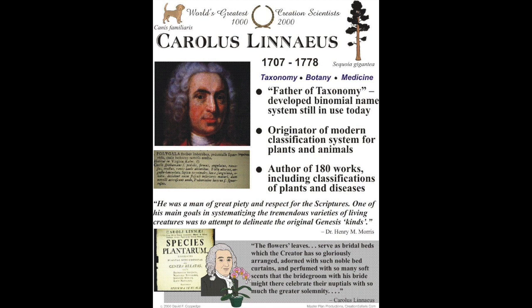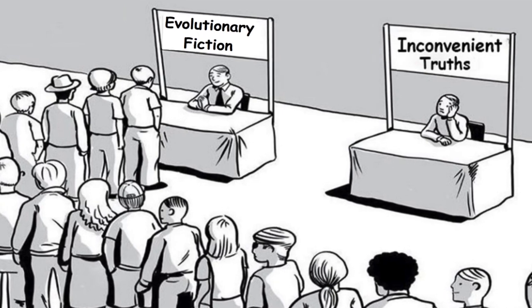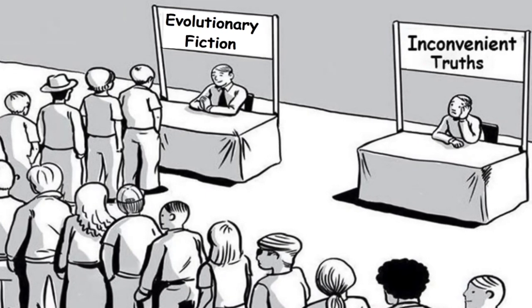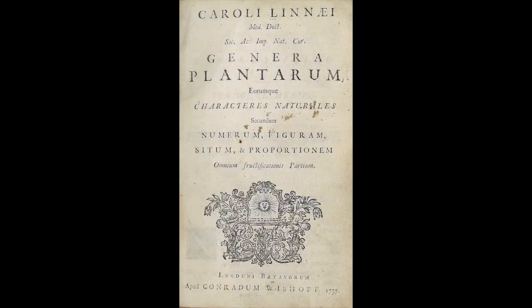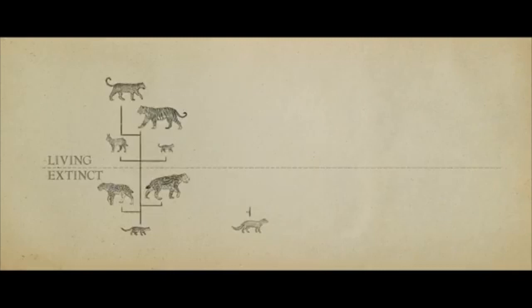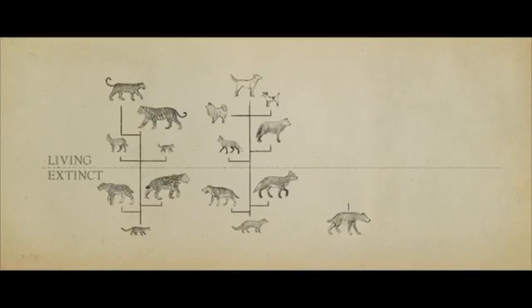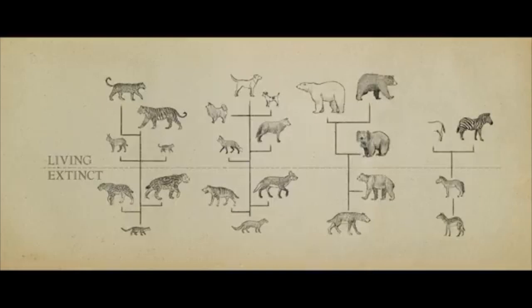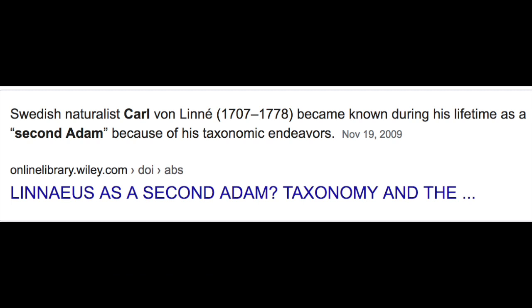Carl Linnaeus, the father of taxonomy, believed that he was God's chosen instrument for revealing in a precise way the divinely ordered work of creation. As a creationist, he initially shared the then-prevalent view that each species had originally been specially created by God. In his book he wrote: 'There are as many species as the infinite being produced diverse forms in the beginning.' Linnaeus did not believe in evolution, just variation within major groups — which is what creationists accept today.